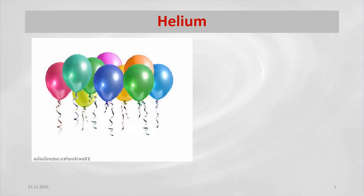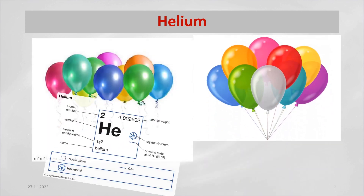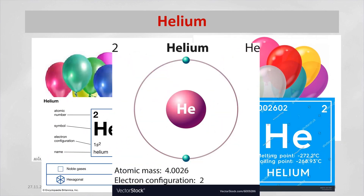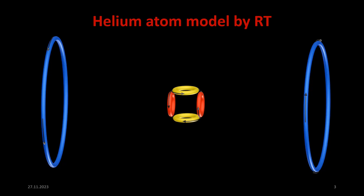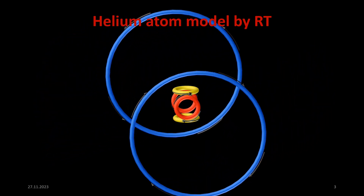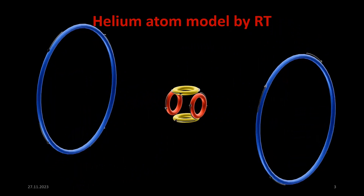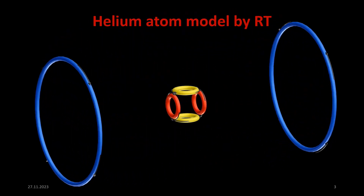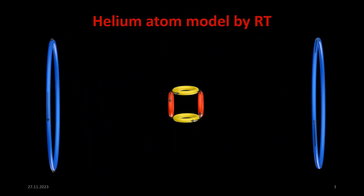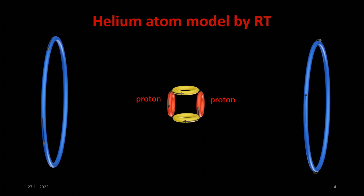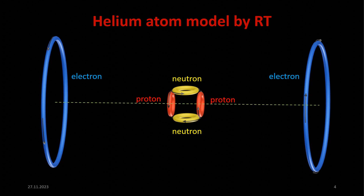We can look at the helium atom from different perspectives. We will show a model of the helium atom from the point of view of ring theory. According to the ring theory, the model of the helium atom consists of an atom's nucleus consisting of two ring protons and two ring neutrons, and an electron shell composed of two ring electrons located on a common axis with both protons.